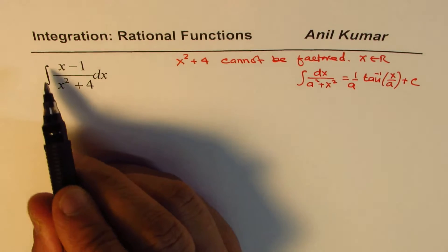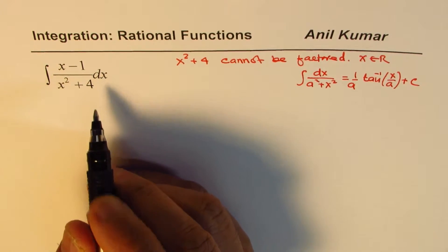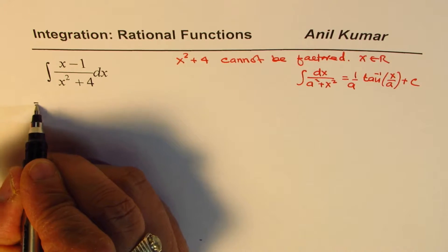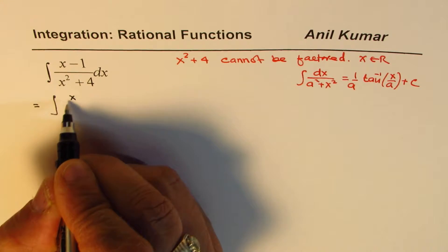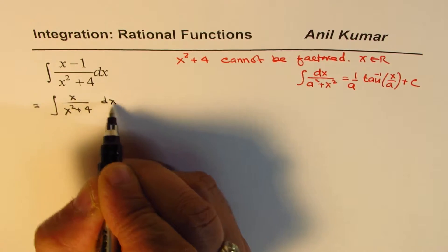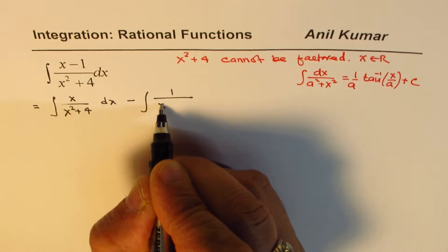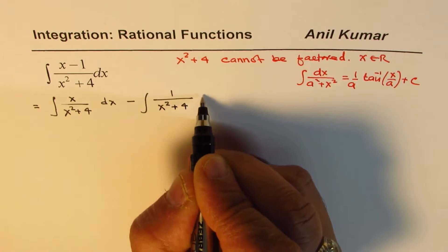Now, the question here is we need to integrate x minus 1 divided by x squared plus 4 dx. So, we could now write this as integral of x over x squared plus 4 dx minus integral of 1 over x squared plus 4 dx.